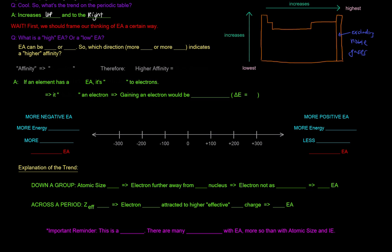Before we go on, we should frame our thinking of electron affinity a certain way. We have to answer the question: what is a high electron affinity, and what is a low electron affinity? The reason is because electron affinity can be negative or positive — so which direction, more negative or more positive, indicates a higher affinity? With ionization energy, all values were positive, so the more positive it was, the higher it was. But with electron affinity, it's not as intuitive.